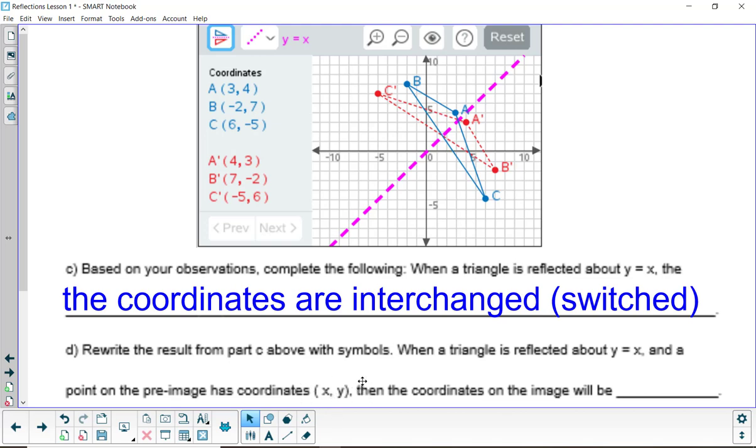How would you write that as symbols? x, y would map to what ordered pair? And that would be y comma x showing that those two are interchanged. Again, it's important that you understand both the verbal and the symbolic way to represent that.